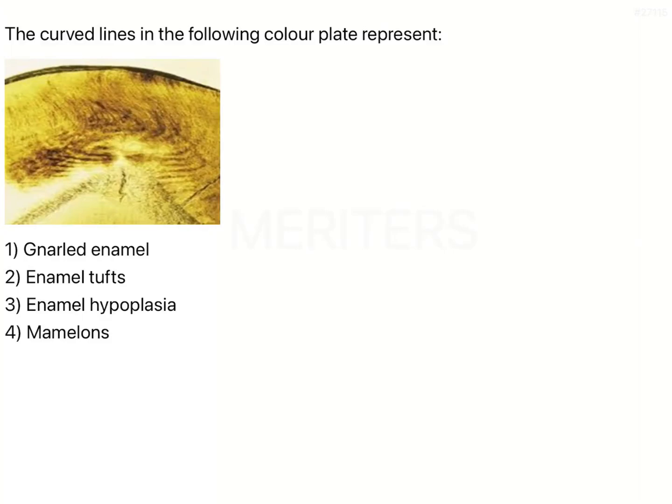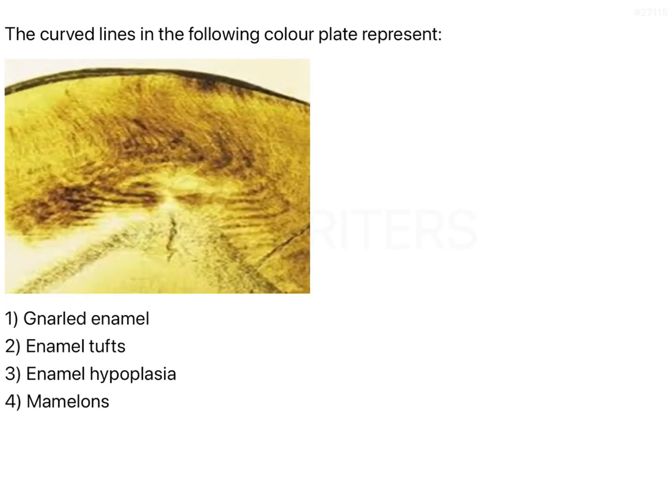The question is: the curved lines in the following color plate represent what? Let me enlarge the image a little for you. What you can see is probably a ground section, because it is a little brownish in color. As you know, enamel appears brown in color, so this is probably a ground section of the enamel.